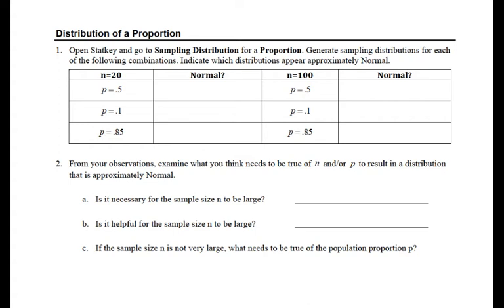We've seen that if a randomization distribution looks approximately bell-shaped, it's reasonable to use a normal distribution to approximate it for finding a p-value. What we're going to investigate is how we could know, without looking at a randomization distribution or a sampling distribution, whether or not it's reasonable to use a normal distribution.